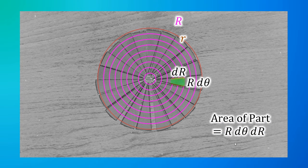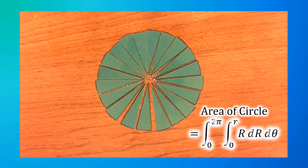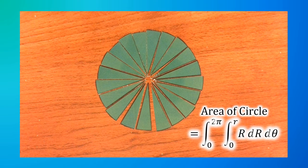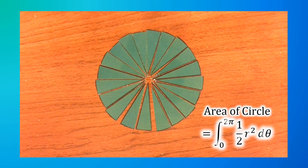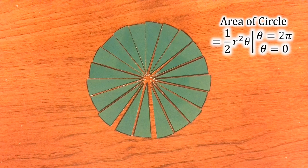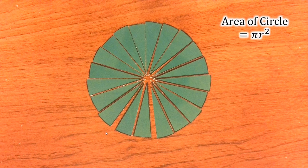Based on the commutative property of multiplication, we can rearrange that. So if we want the area of the whole circle, we get the double integral from 0 to 2π of the integral from 0 to r of R·dR·dθ. Integrating, substituting, and simplifying gives us the area of the circle as π·r².